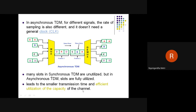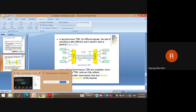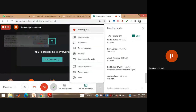In synchronous TDM, many slots are unutilized, but in asynchronous TDM slots are fully utilized, leading to smaller transmission time and efficient utilization of channel capacity. These are the two subtypes of Time Division Multiplexing — synchronous and asynchronous TDM — and TDM is used for digital data transmission. This concludes today's topic on digital multiplexing.